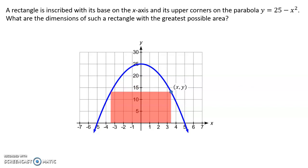So let's imagine an arbitrary rectangle where the coordinates where the rectangle touches the curve are at some x, y. But we know something about y because this point lies on the parabola. So that y is really 25 minus x squared.